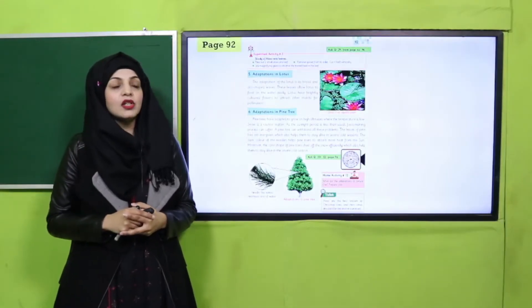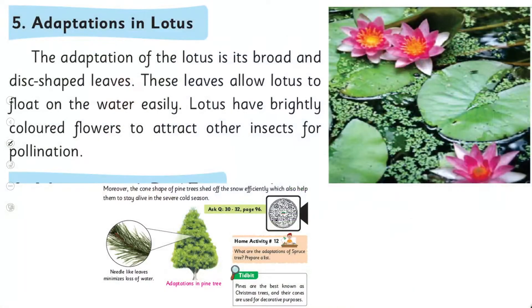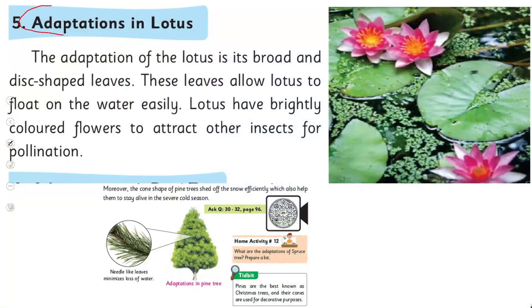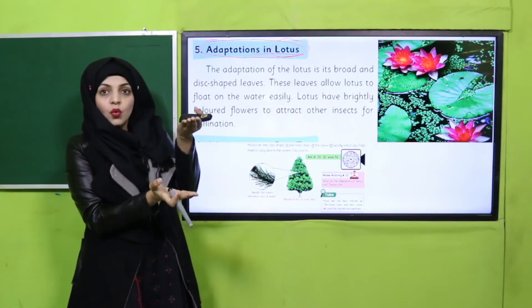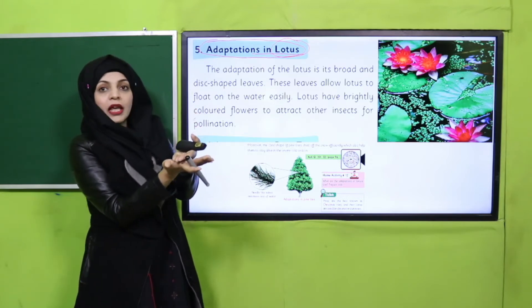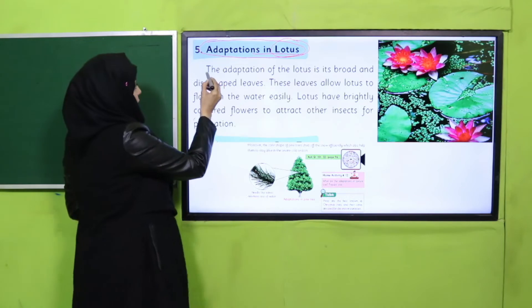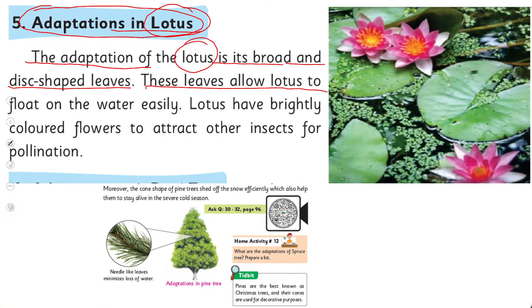Everyone please open page number 92. Look at the picture — there is water and on it there are beautiful flowers floating with big, large leaves. This is a lotus plant. Water lily is similar in the same way. Today we will study the adaptations of lotus. The lotus grows under the water and above the water, slightly above the water surface. Water lilies grow exactly on the top of the water.